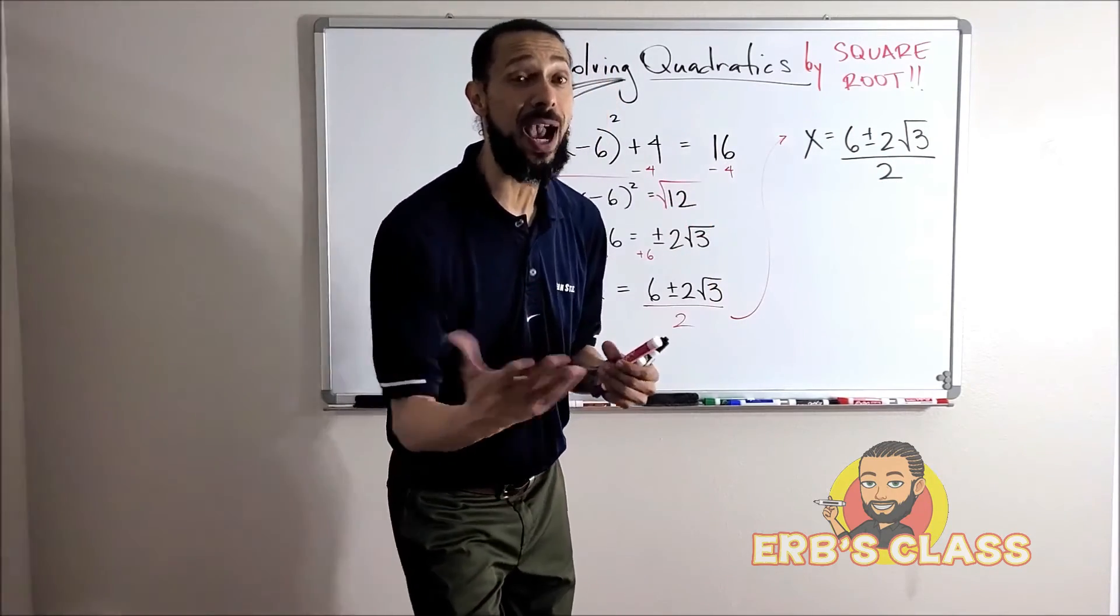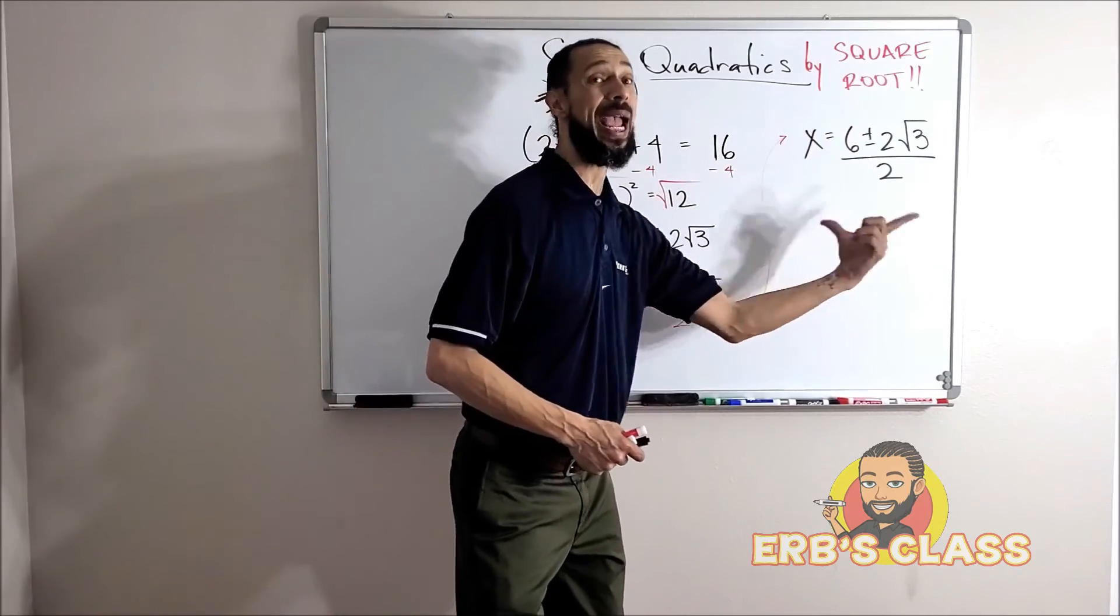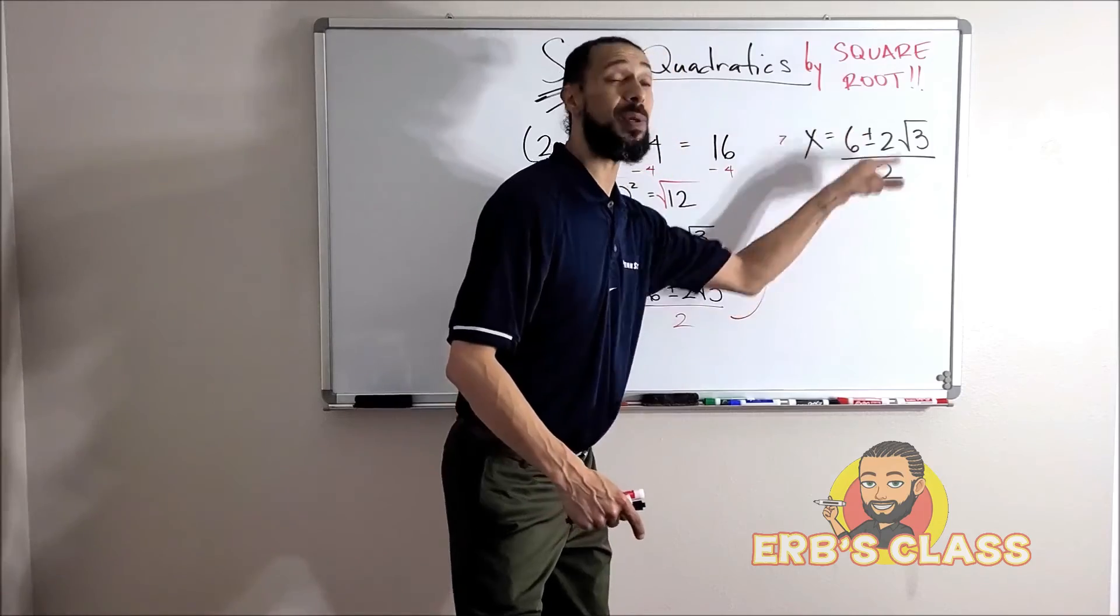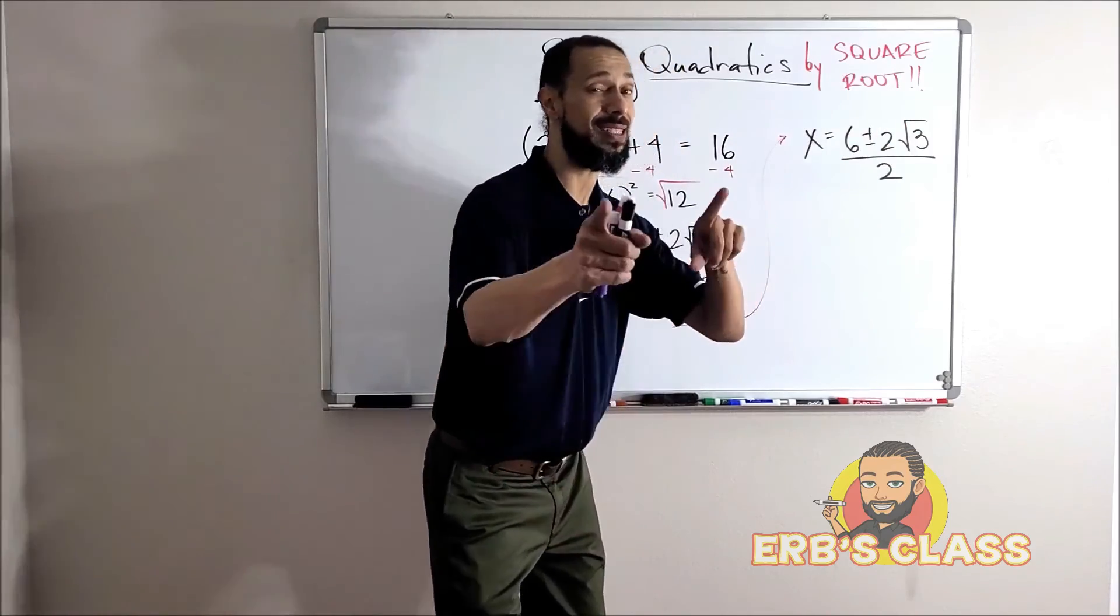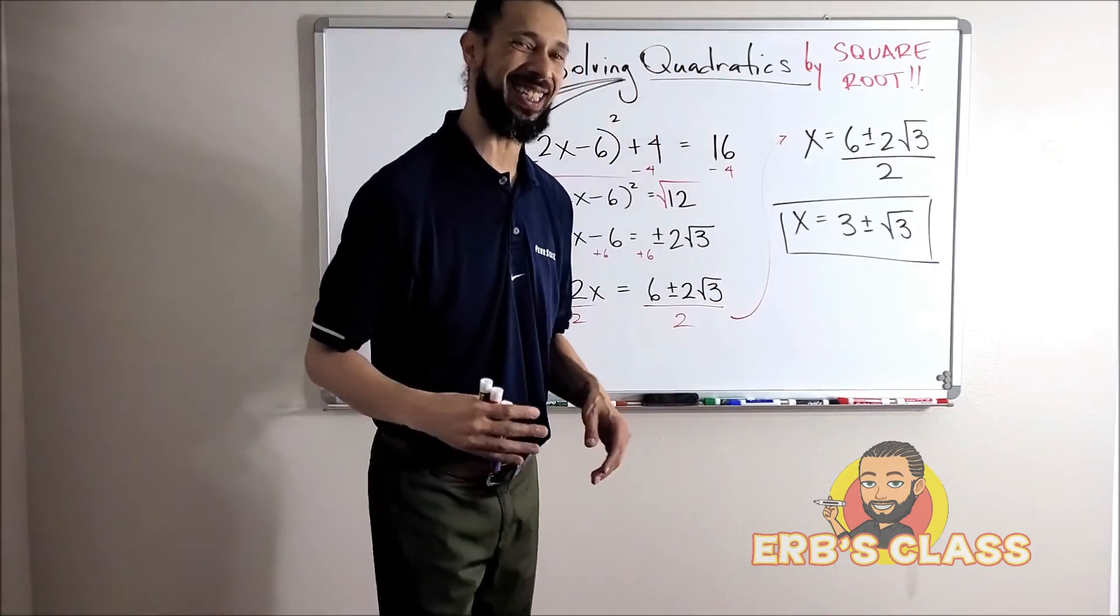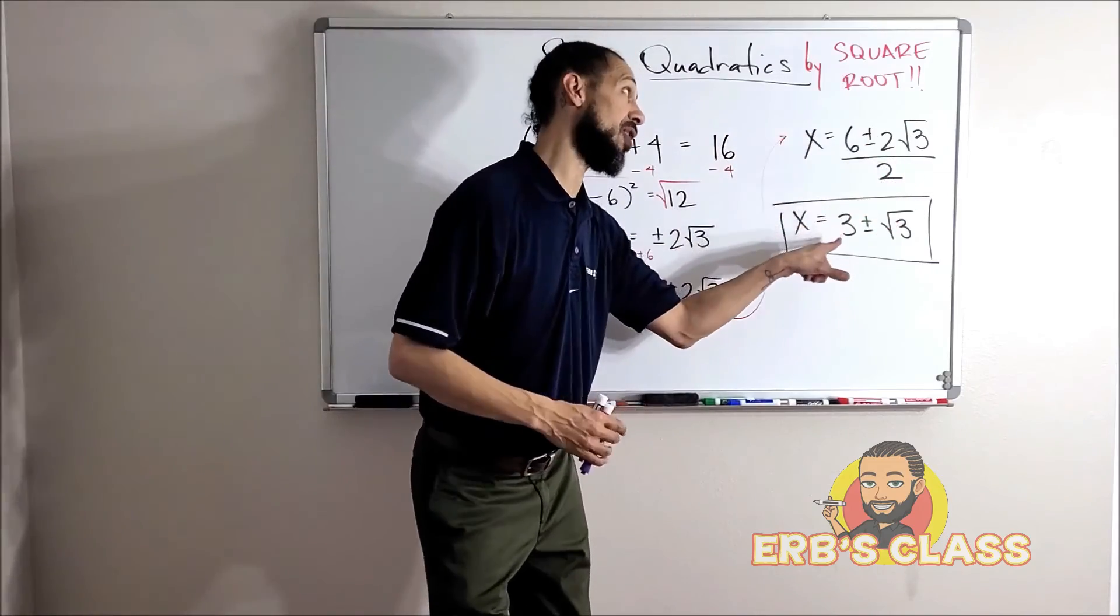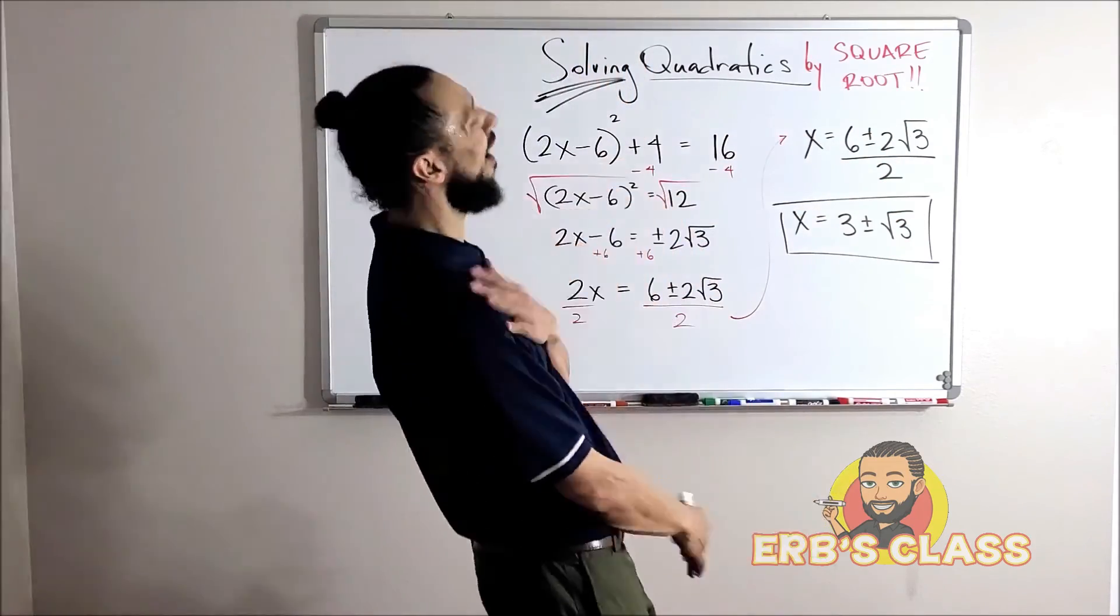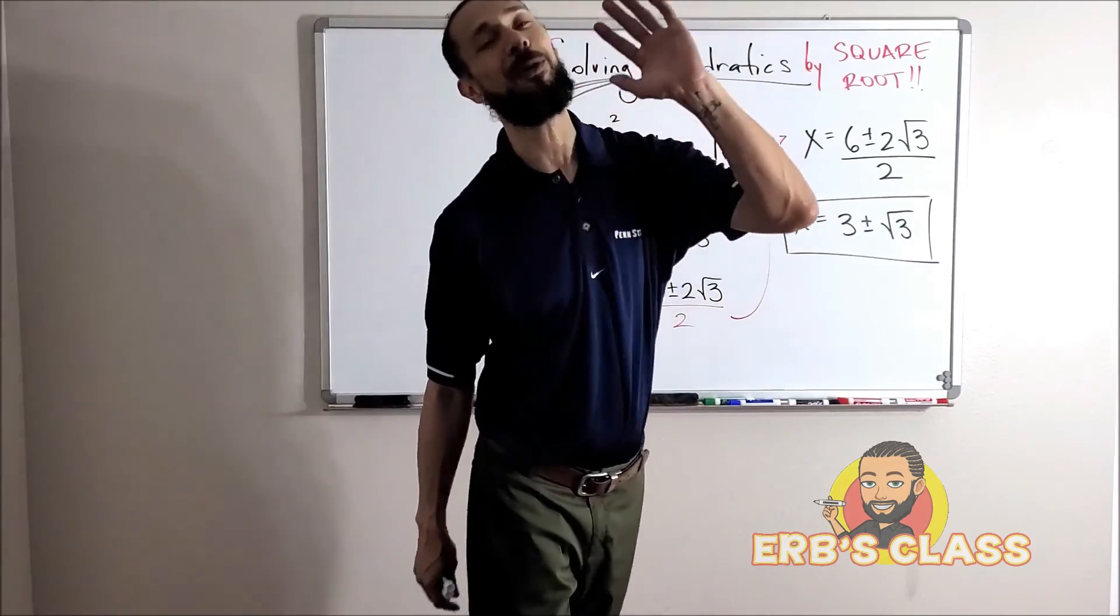Think of it as two separate fractions. I can do six over two and I can do this two square root of three over two, so we can simplify all of that at once like this. Yes, exactly like that. Six divided by two is three, and this two and this two cancel.